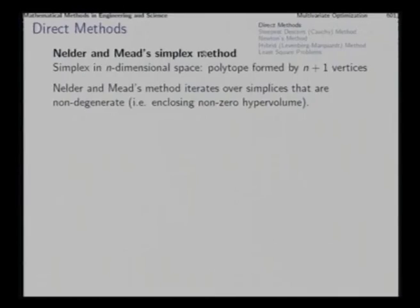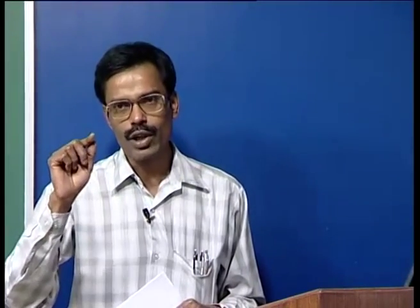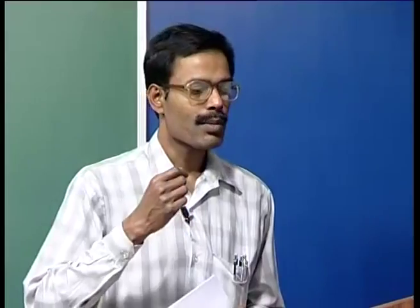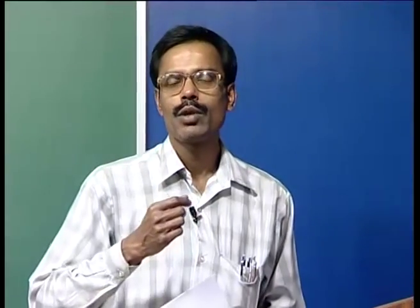First, what is a simplex? In two-dimensional space, a triangle is the simplex, that is a polygon composed of three vertices. In three-dimensional space, a tetrahedron is a simplex. In two-dimensional space, among triangle, quadrilateral, pentagon, hexagon and so on, what is special about a triangle? The special property of a triangle which is not shared by any other polygon is that a triangle by nature is convex.